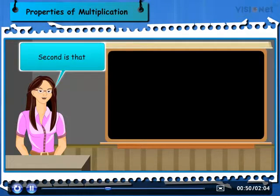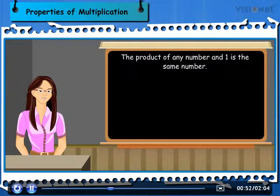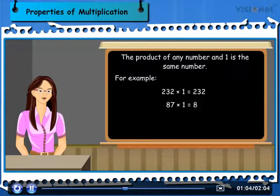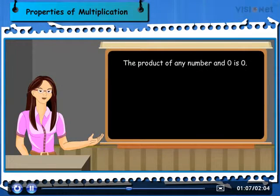Second is that the product of any number and 1 is the same number. For example, 232 × 1 is equal to 232. 87 × 1 is equal to 87.